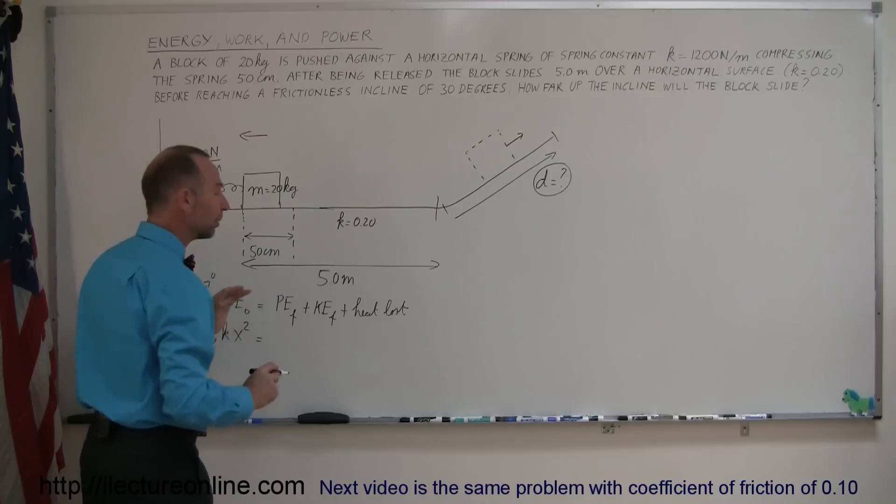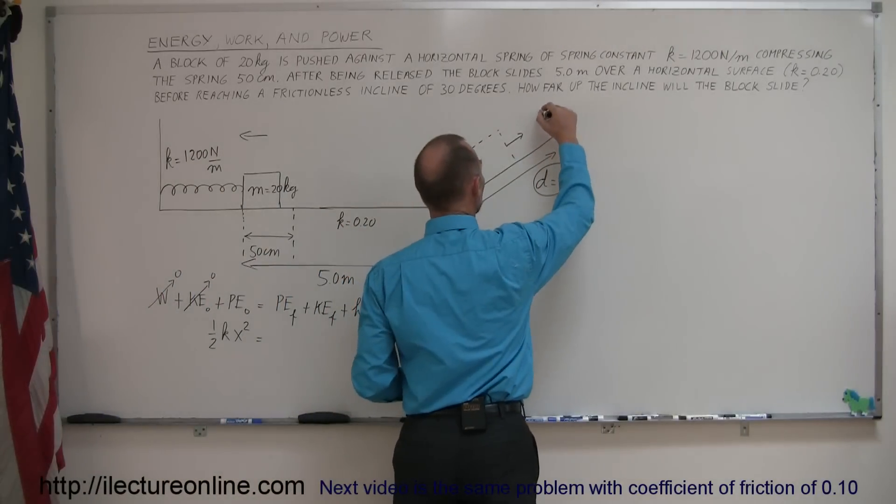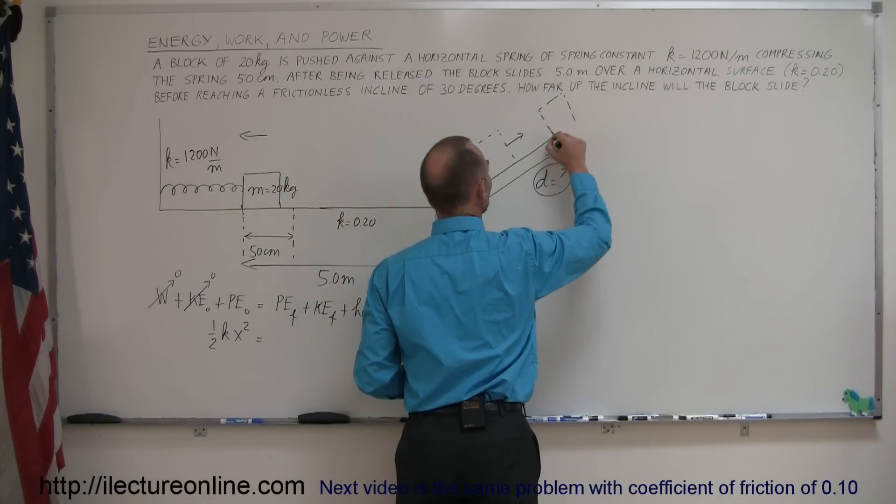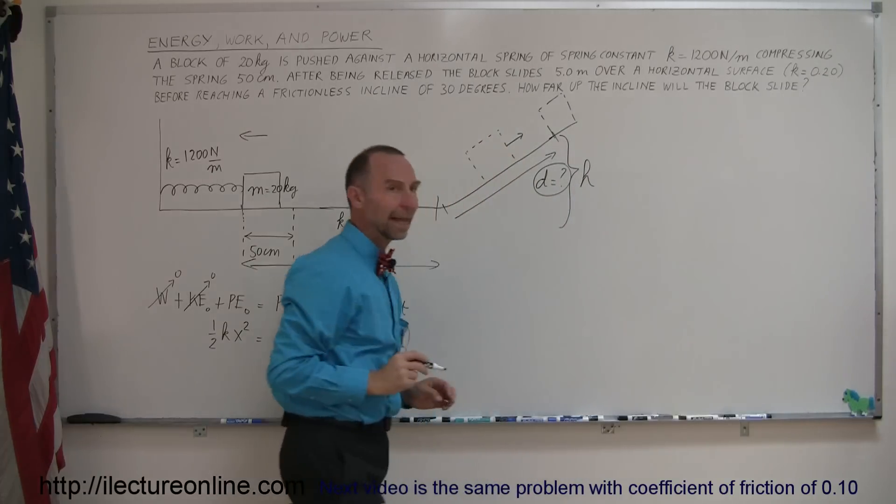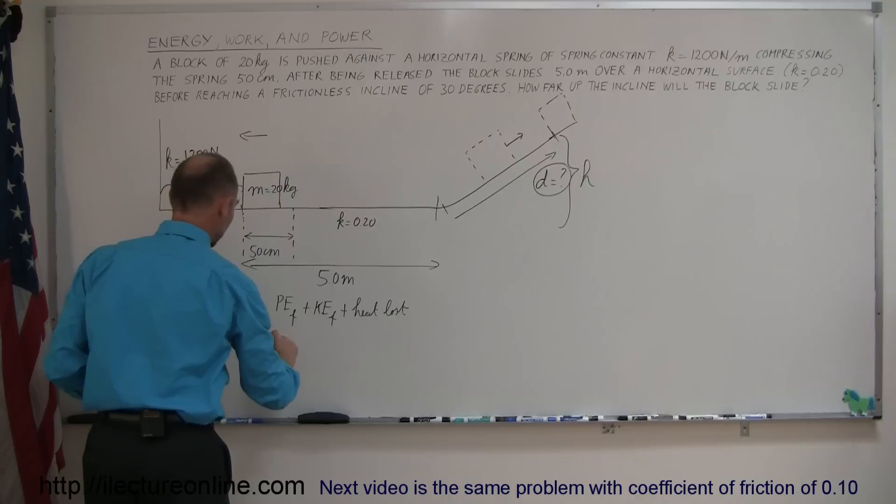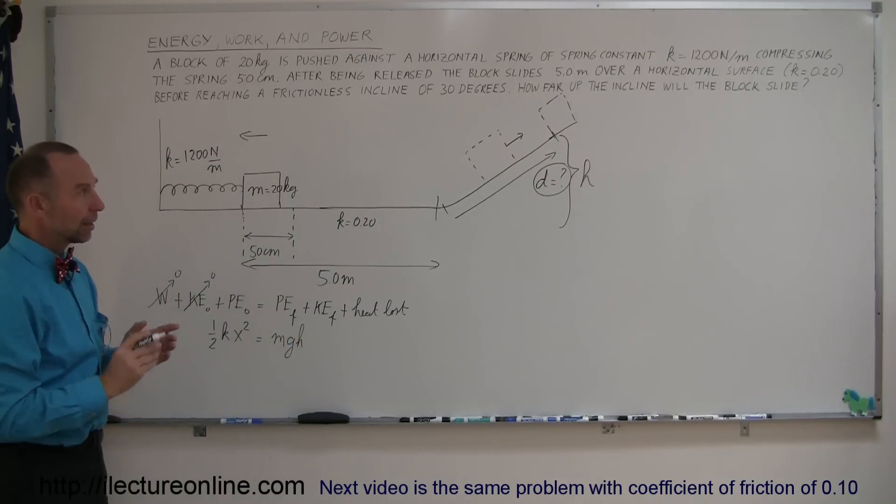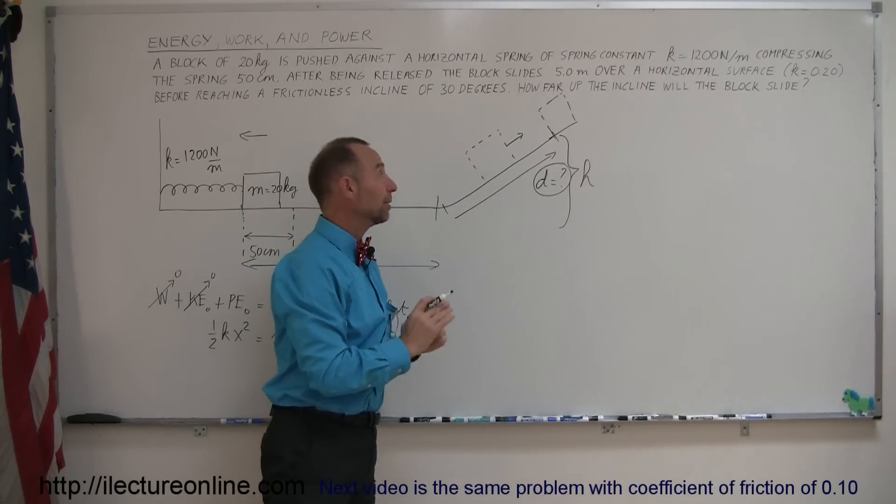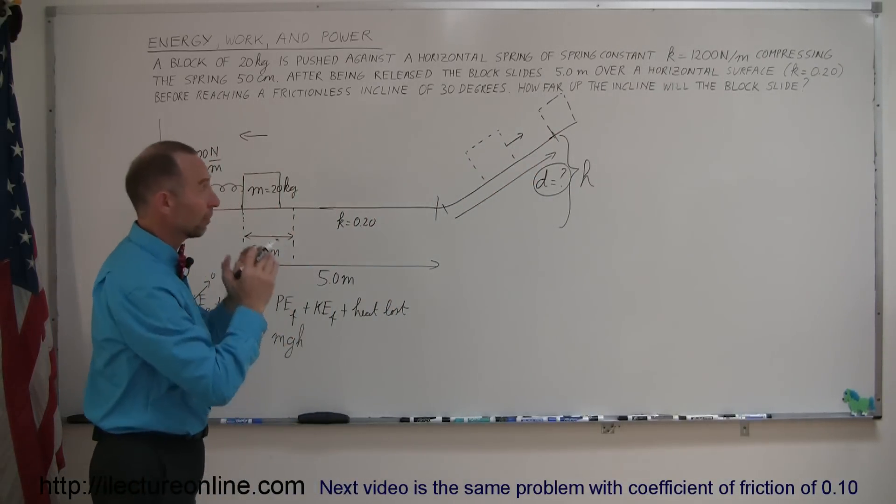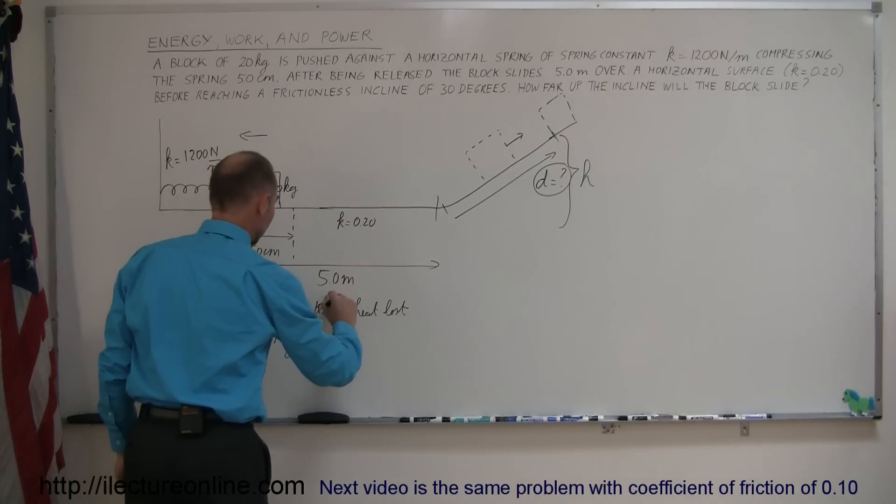That equals the final potential energy of the system. Now, if the block slides up a certain distance, like so, and this is the final position, we then know that the block will be at some height h. So we can say that it has potential energy mgh. The block, at the very end, when it reaches its highest point, there will be no movement of the block. The block will momentarily come to a halt. That means there's no kinetic energy, so that is zero.